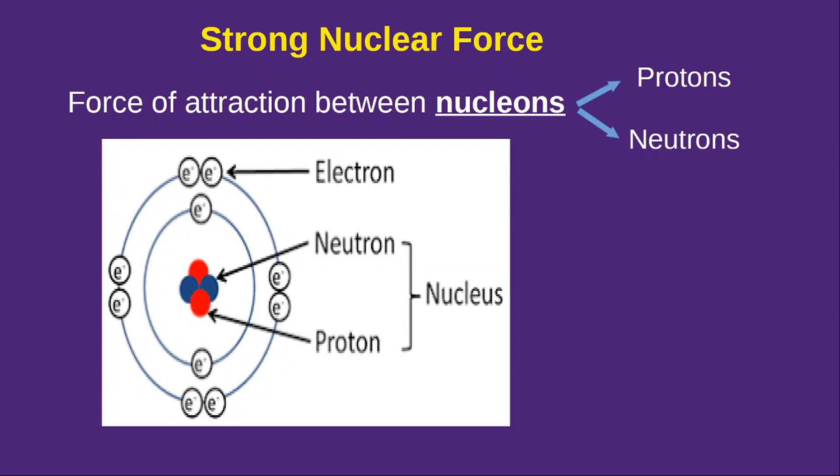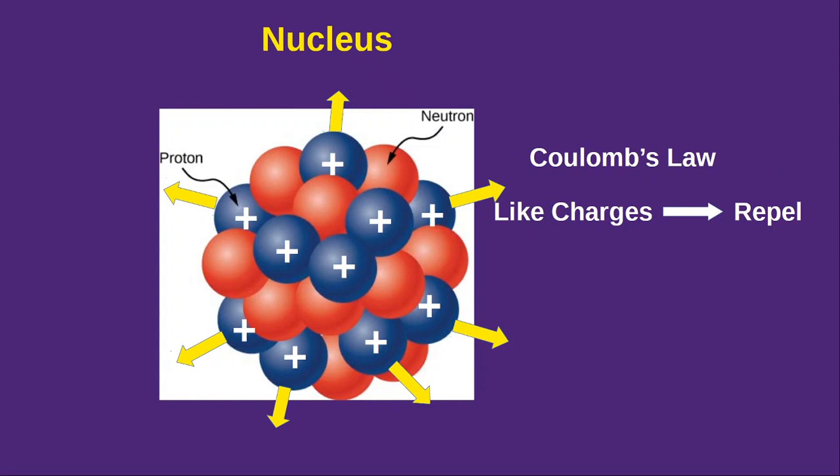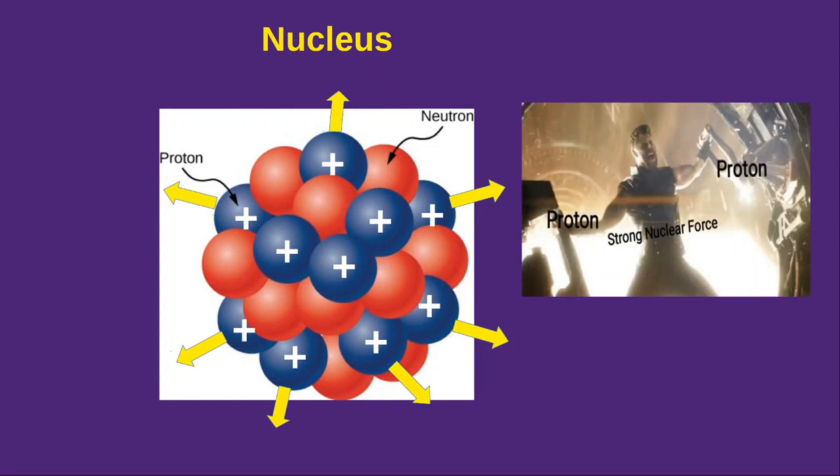So in the picture you can see that electrons are revolving round the nucleus which is made up of neutrons and protons. Protons are the positively charged particles. So from Coulomb's law these like charges must repel away from each other. But this does not happen.